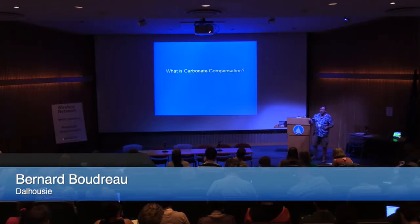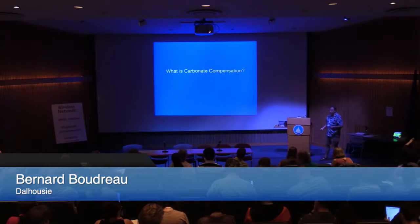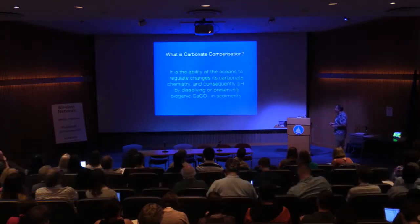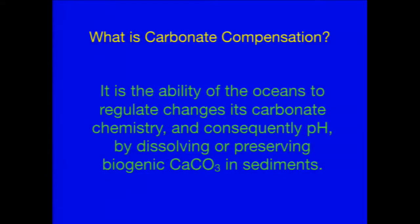So what's carbonate compensation? I'm going to start with some things you should have learned in first year of chemical oceanography, but I'm making comparisons. It's the ability of the oceans to adjust their chemistry — their carbonate chemistry and, therefore, the pH — by either preserving or dissolving calcium carbonate.